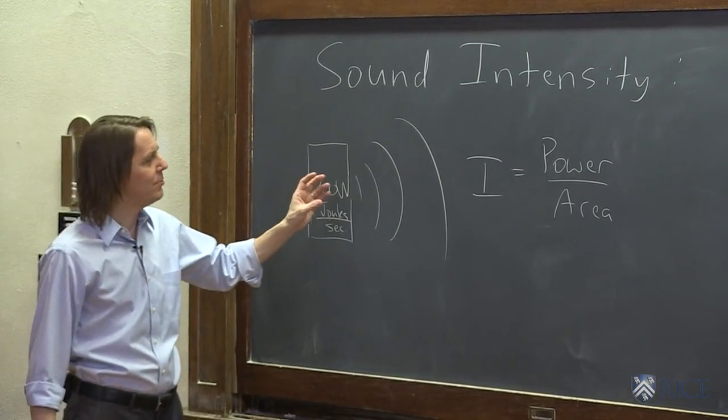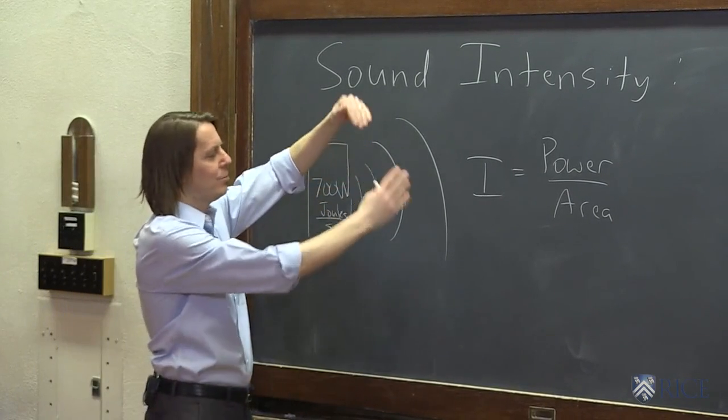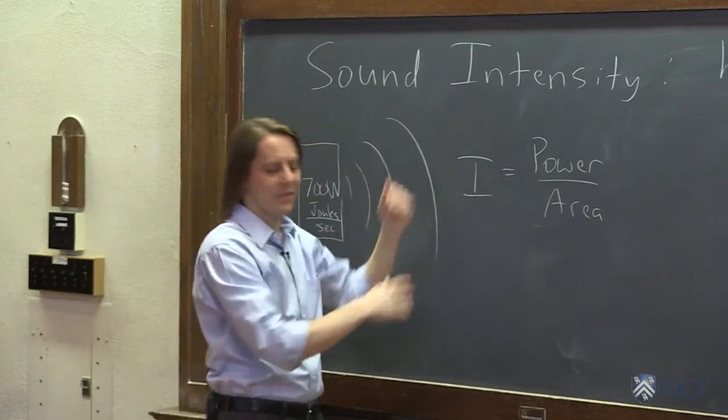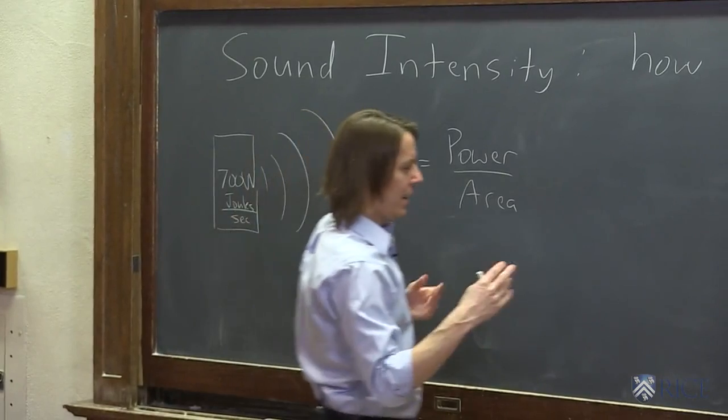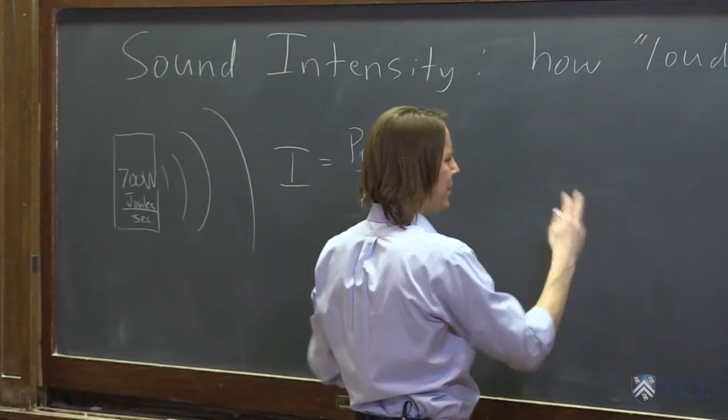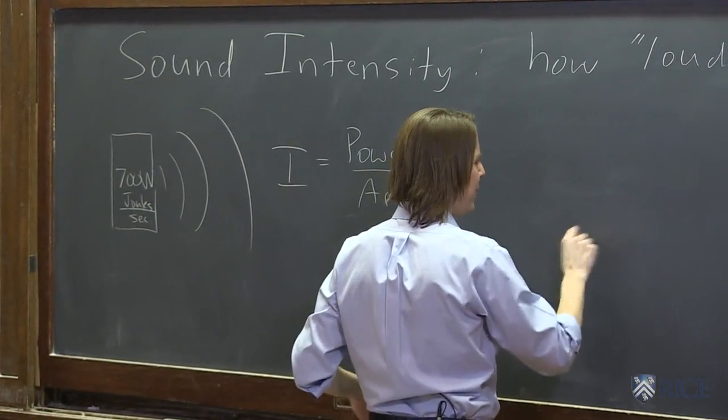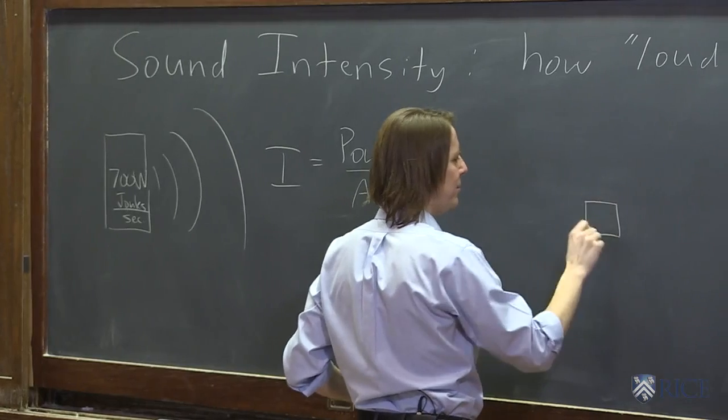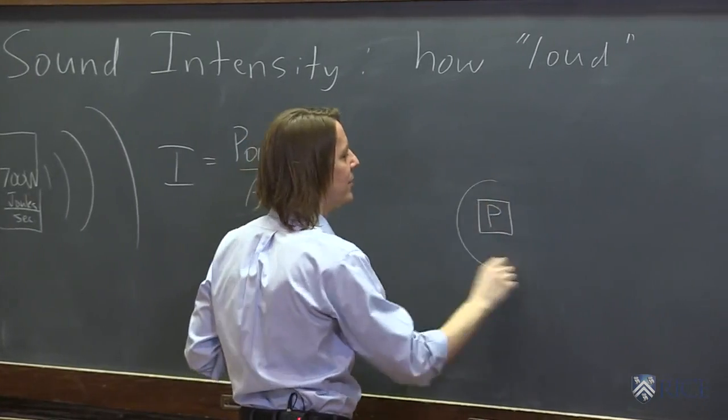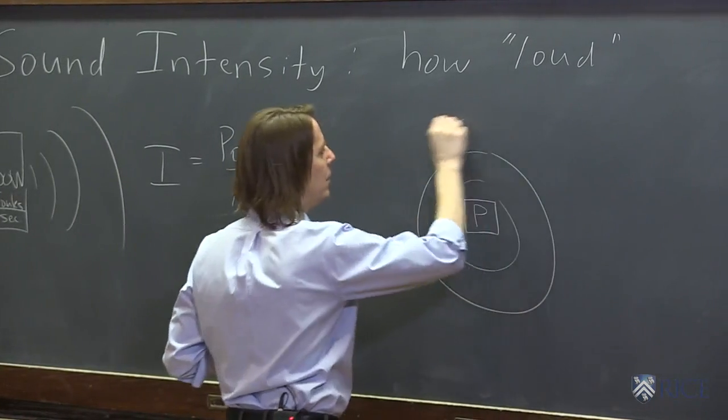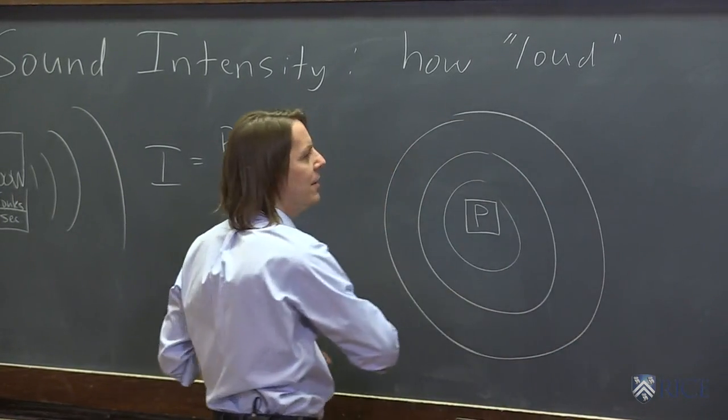So this is how much energy it's cranking into the air every second. But then intensity means something else. Means how much, how is that spread out over a certain area. So intensity is the power per unit area. And let's see, then if we think about this speaker, let me draw it again. So now if we have, say, a little speaker like this, let's have it going out in all directions. So let's say it has some power p in watts, and it's sending out a sound like this, then intensity